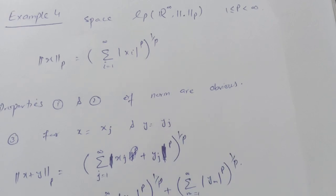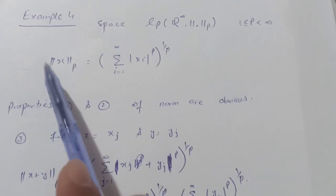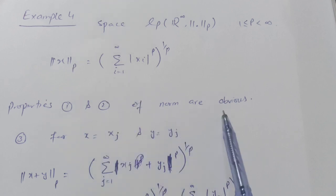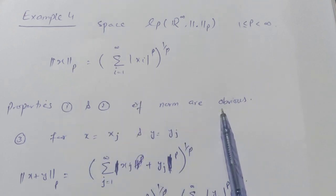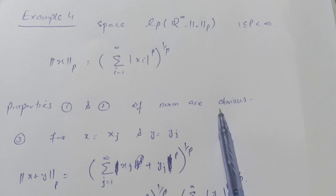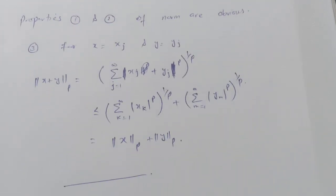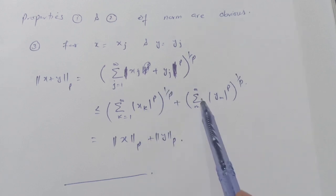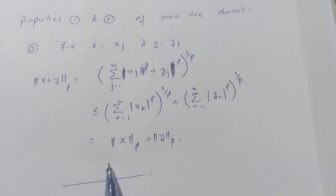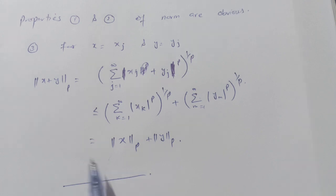For the last example, the lp space with ||x||p = (Σ|xᵢ|ᵖ)^(1/p): the first and second properties are obvious — the norm is non-negative, equals 0 if and only if x = 0, and ||λx||p = |λ| · ||x||p. The third property, the triangle inequality, follows directly from Minkowski's inequality. Therefore, all four examples satisfy all norm axioms, confirming they are normed spaces.